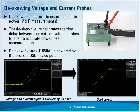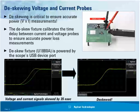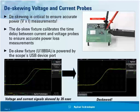Before beginning any measurements, especially for switching measurements, it's very important to de-skew the probes. Here we show a clamp-on type current probe — a typical type used for these measurements. There can be different lead lengths between the current probe and the voltage probe, causing skew. You can automatically de-skew these probes using the fixture we provide — just press a button. The scope will automatically align the voltage and current waveforms so you can make very accurate measurements.